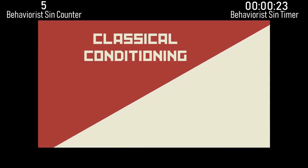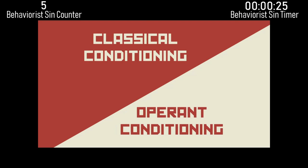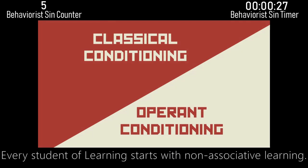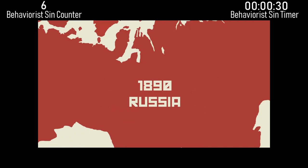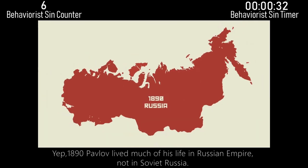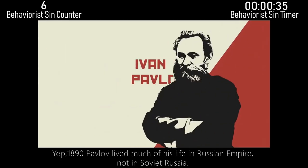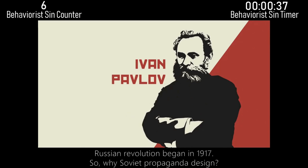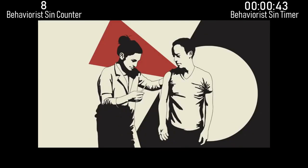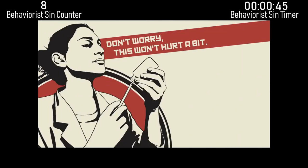Two of the main types of learning are called classical conditioning and operant conditioning. Every student of learning starts with non-associative learning. In the 1890s — yep, 1890s — Pavlov lived much of his life in the Russian Empire, not in Soviet Russia. The Russian Revolution began in 1917, so why use Soviet propaganda design?